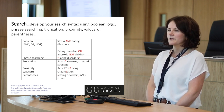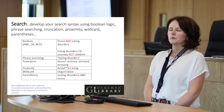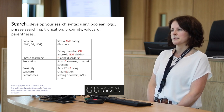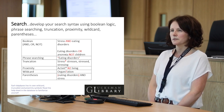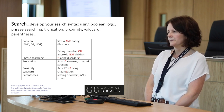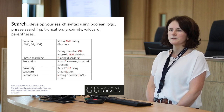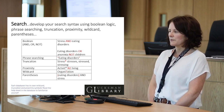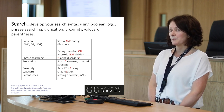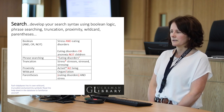Phrase searching involves putting a key term like 'eating disorders' in inverted commas, so the database retrieves papers focused on that exact phrase rather than splitting 'eating' and 'disorders' separately. Truncating means placing an asterisk after a word — for example, 'stress*' — to pick up variations like stresses, stressed, and stressing.